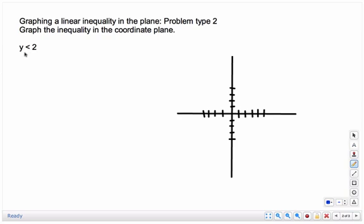So this is going to be y is less than 2. There's no equal to part, so that means it's going to be dashed, a dashed line. And we graph y equals 2.